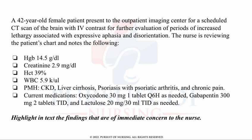This is a highlight-in-text style question. It will test your knowledge of physiological integrity. A 42-year-old female patient presents to the outpatient imaging center for a scheduled CT scan of the brain with IV contrast for further evaluation of periods of increased lethargy associated with expressive aphasia and disorientation. The nurse notes the following: hemoglobin 14.5, creatinine 2.9, hematocrit 39%, white count 5.9. Past medical history includes kidney disease, cirrhosis of the liver, psoriasis with psoriatic arthritis, and chronic pain. She is currently prescribed oxycodone, gabapentin, and lactulose. Highlight the findings that are of immediate concern to the nurse.